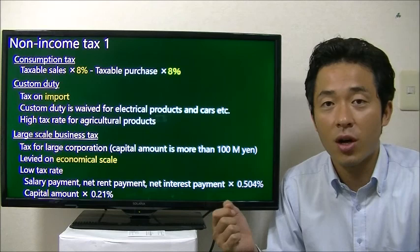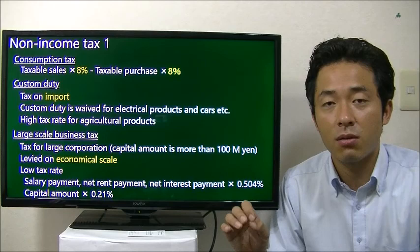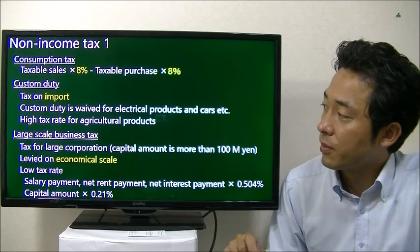For example, customs duty is waived or very low for electronic products because Japan is competitive in manufacturing electronics and cars. On the other hand, the customs duty rate is high for agricultural products.